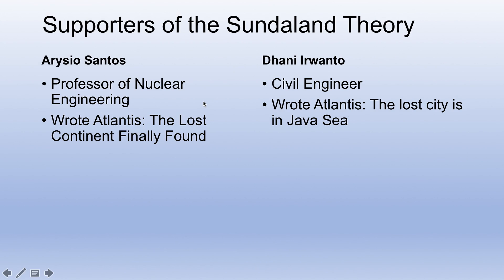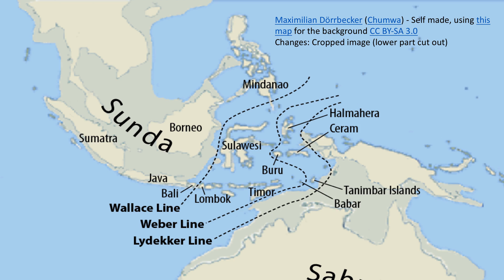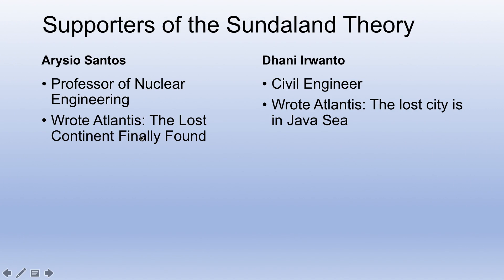So who are the main supporters of the Sundaland theory? There are two main proponents of this idea, generally speaking, and they kind of focus their attention on two different specific areas of Sundaland. Sundaland is a very large landmass, so it could very well be that different Atlantis researchers focus on different parts of it. It's easily large enough to fit different areas, and it turns out that is indeed the case.